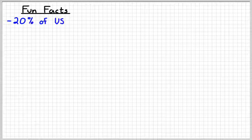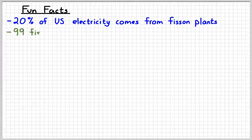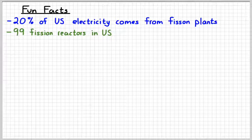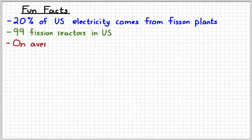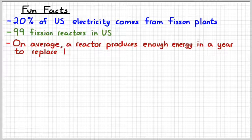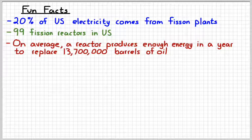Some more quick fun facts. Don't feel like you need to write these down. 20% of the electricity in the United States comes from fission power plants. Last I checked, there were 99 commercial fission reactors in the United States. Just about every major research university is also going to have a fission reactor, but they're not so much for generating electricity, they're more for generating things like neutrons to use in physics studies. On average, a nuclear reactor produces enough energy in a year to replace, and this is going to be a big number, 13.7 million barrels of oil. So in order to get the same amount of energy from oil, we would need 13.7 million barrels of the stuff, which is expensive and has problems of its own.